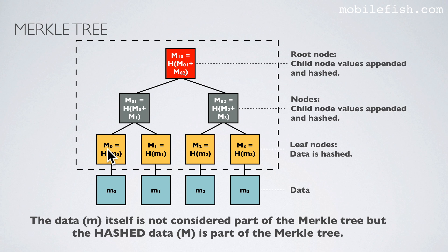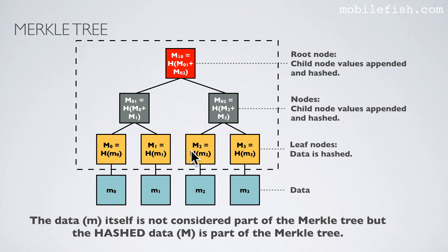If we append this hash value with this hash value and hash them together, we get another hashed value. We do the same for the next pair of hash values — the plus sign means appending two values with each other. If we do the same with these two resulting values, we get a final hashed value called the root. The raw data M itself is not considered part of the Merkle tree, but the hashed data M is. So a Merkle tree is a tree of hashed values.